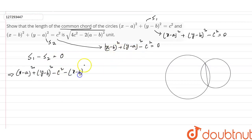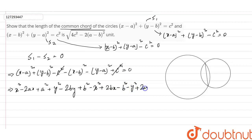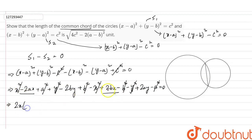Now computing S1 minus S2 equals zero: expanding gives x² - 2ax + a² + y² - 2by + b² minus x² + 2bx - b² minus y² + 2ay - a² = 0. The x² and y² terms cancel out.